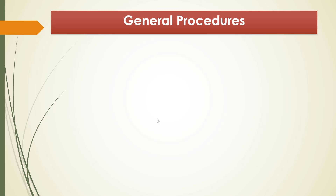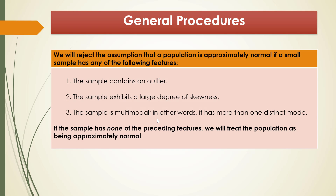The general procedure to examine whether a sample follows an approximately normal distribution is just detecting a sign of non-normality. We will reject the assumption that a population is approximately normal if a small sample has any of the following features.